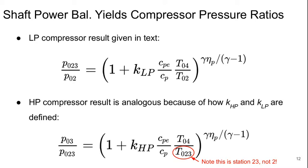And for the high pressure compressor, the results are analogous because of how KHP and KLP are defined. But note that the total temperature ratio here is not T0.4 over T0.2, but it's T0.4 over T0.23. So it's the total temperature ratio from the turbine inlet to the high pressure compressor inlet.